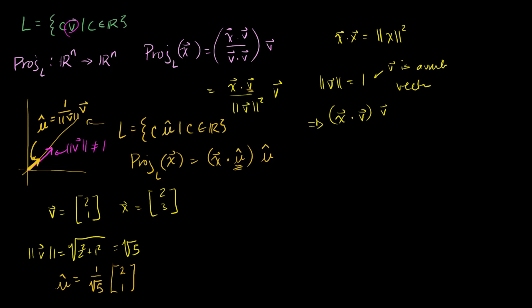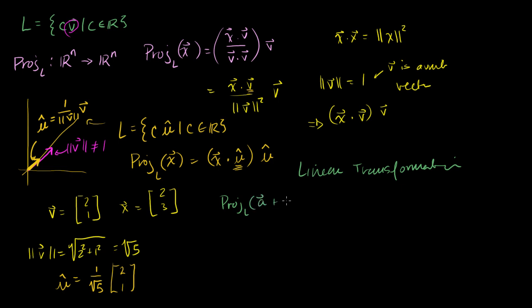This projection is a transformation from Rn to Rn. The one thing we're not sure of just yet is whether this is a linear transformation. There are two conditions for it to be a linear transformation. Let's see what happens if we take the projection onto L of two vectors — the sum of vector a plus vector b. If this is a linear transformation, this should be equivalent to taking each of their projections individually and then summing.